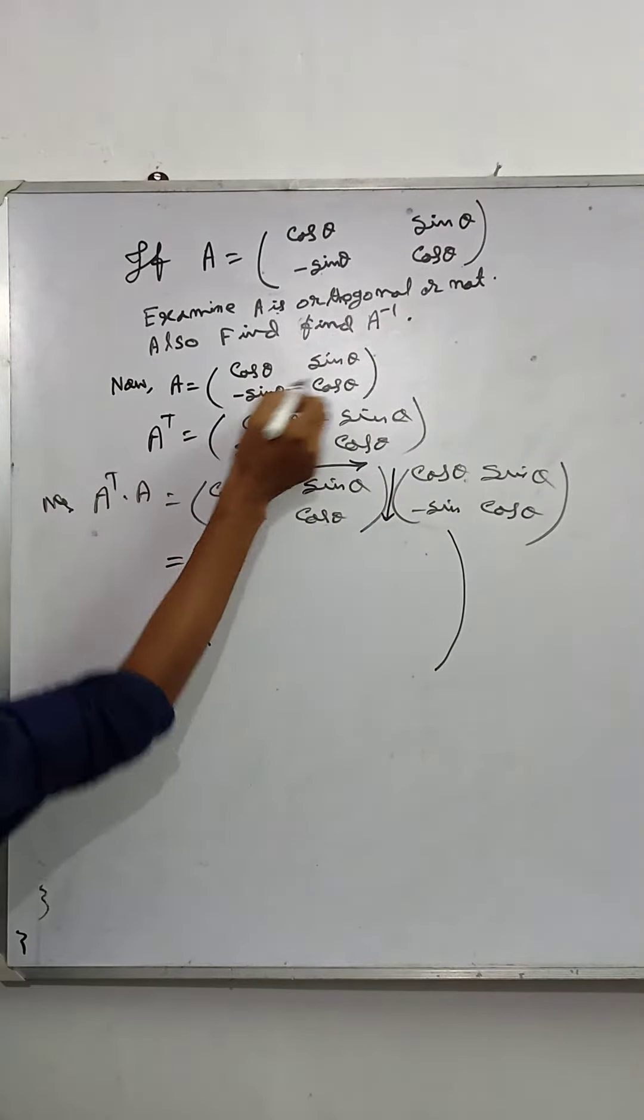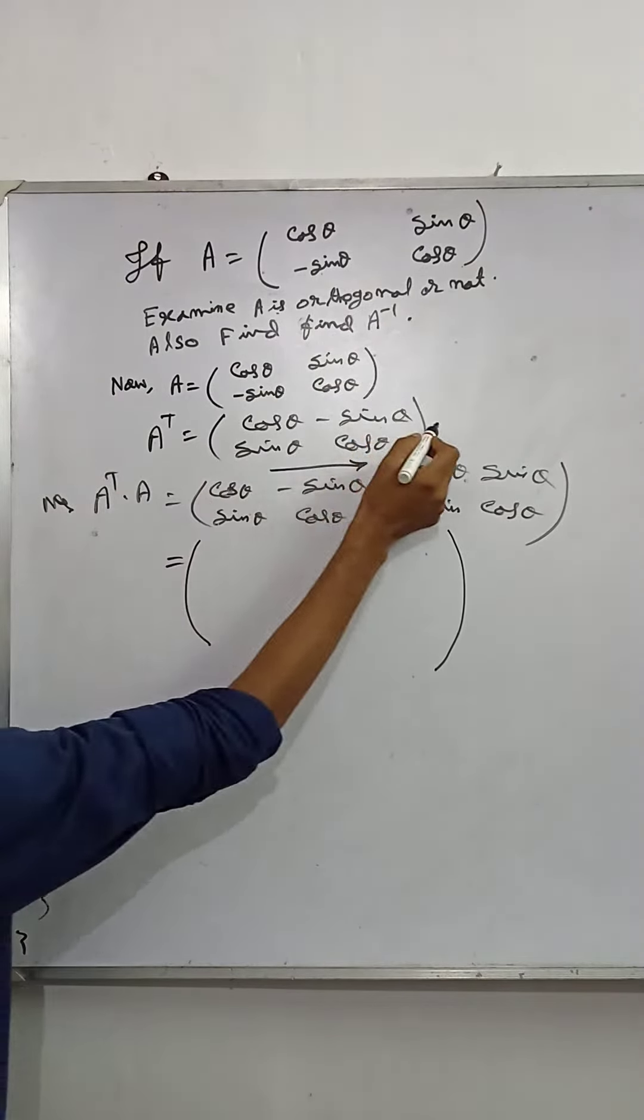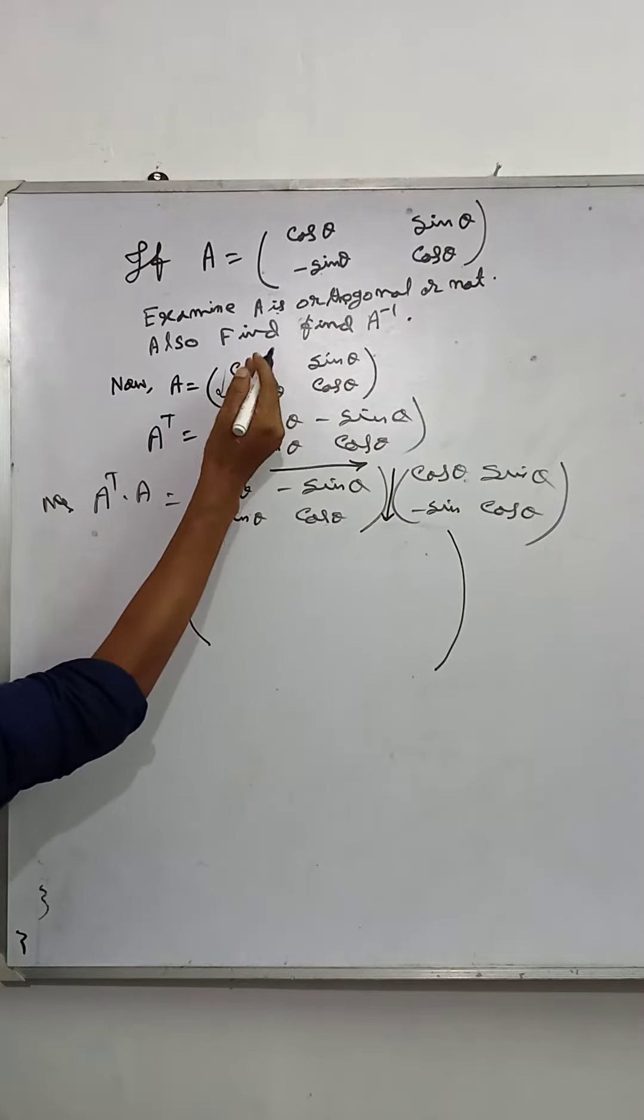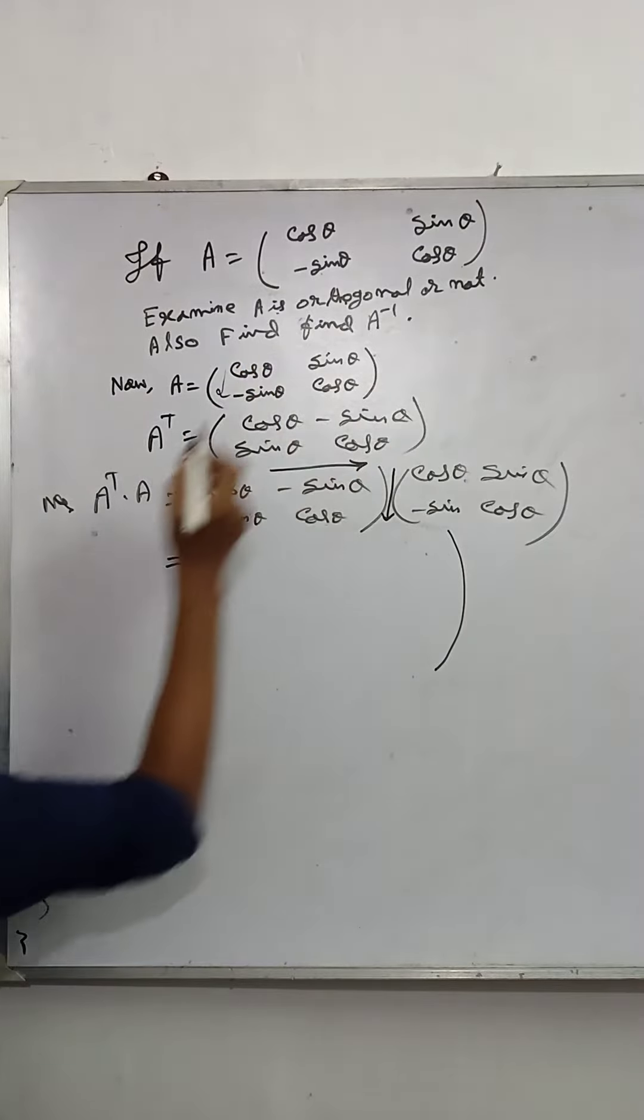Now, A is equal to this given matrix. A transpose is found by transposition: rows become columns and columns become rows.